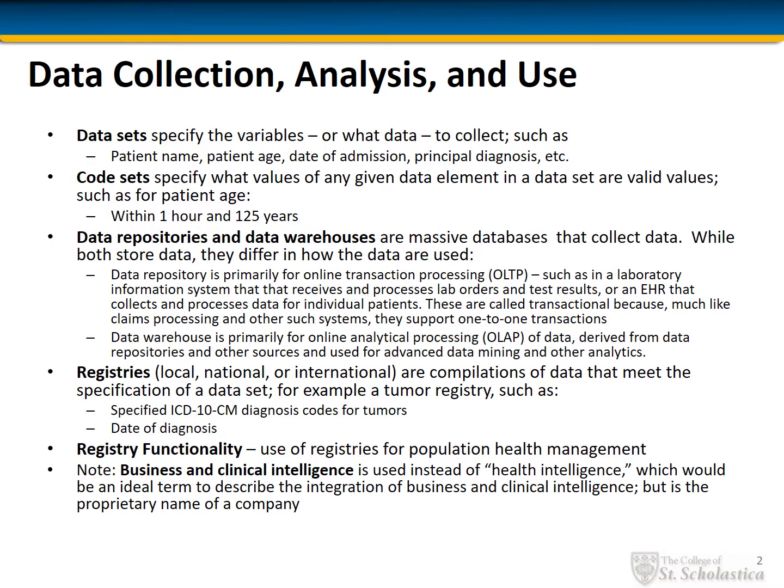Second, code sets, which specify what values of any given data element in a data set are valid values. For example, for patient age, metadata would specify that the age field must contain data between 1 hour and 125 years, or something similar. Diagnosis codes may be specified as any code within the ICD-10 classification system, or in some cases the specification may be more precise and limit the codes to only certain codes, and there are certainly other code systems as well.